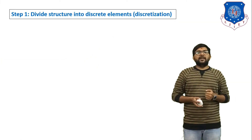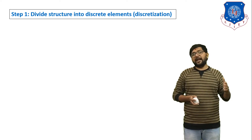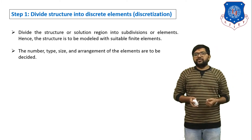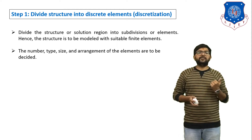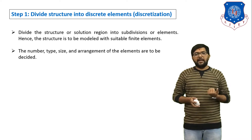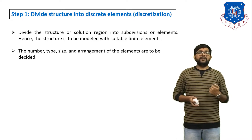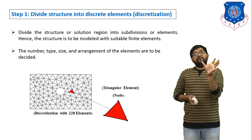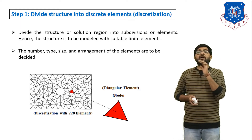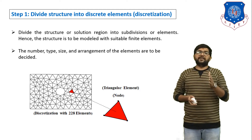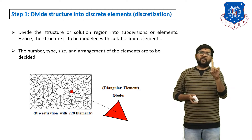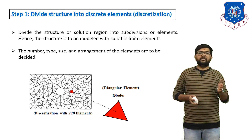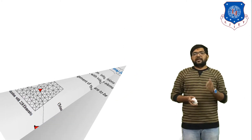Step number one: divide the structure into discrete elements. We have to divide any object into a finite number of elements — divide the structure or solution region into subdivisions or elements. The structure is to be modeled with suitable finite elements; the number, type, size, and arrangement of elements are to be decided. For example, we take one object and divide it into a finite number of triangles. That is the process of discretization — the triangle is one element, and this triangle has a total of three nodes, as you can see in this figure.